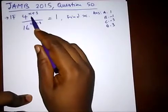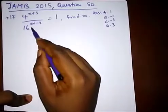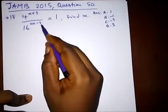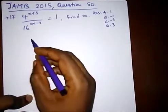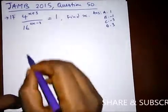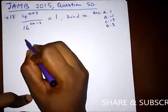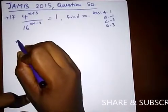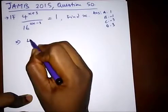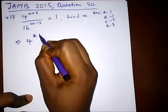It says: if 4 raised to the power of x plus 3 divided by 16 raised to the power of 2x minus 3 is equal to 1, find x. We simply need to simplify, so here we have 4 raised to power x plus 3 over...